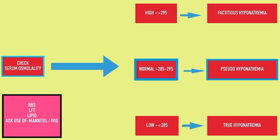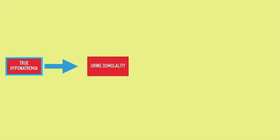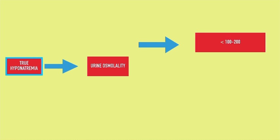After excluding false hyponatremia, you should look at urine osmolality to assess ADH action. If hyponatremia is ADH dependent, urine osmolality will be high.